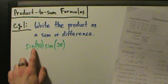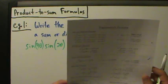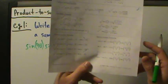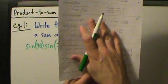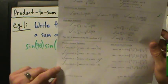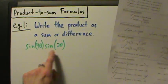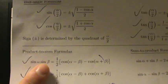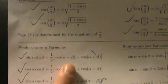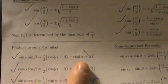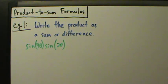So we have sine of 4 theta times sine of 2 theta. If we go back to our formula sheet — and if you want a copy of this, check the video description, there's a link in there to get a copy. So sine of something times sine of something else is going to be this first formula: sine alpha sine beta equals 1 half times cosine of alpha minus beta, minus cosine of alpha plus beta. That's the formula we're going to use.